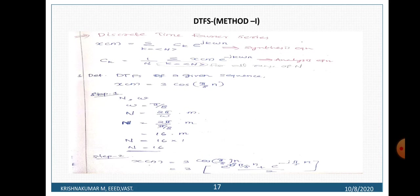How can we get the Discrete Time Fourier Series? The synthesis equation is: x of n is equal to sigma, k ranging over any range of N, times c_k times e raised to j·k·omega·n.